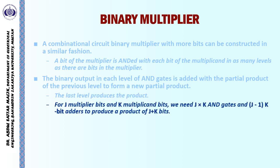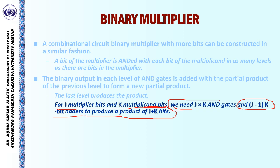For J multiplier bits and K multiplicand bits, we need J × K AND gates and (J − 1) K-bit adders to produce a product of J + K bits. For example, if we have a 4-bit multiplier and a 4-bit multiplicand, then we need 16 AND gates, three 4-bit adders, and we will have an 8-bit product.